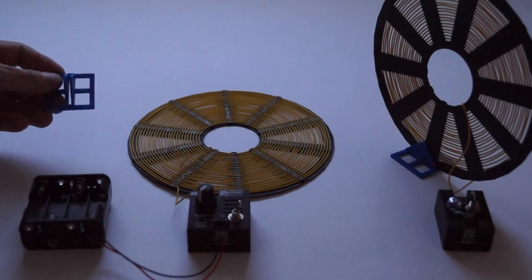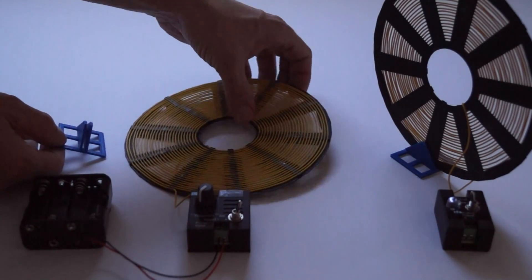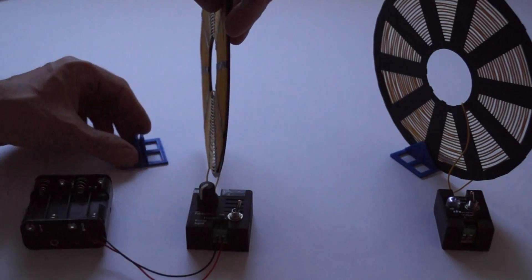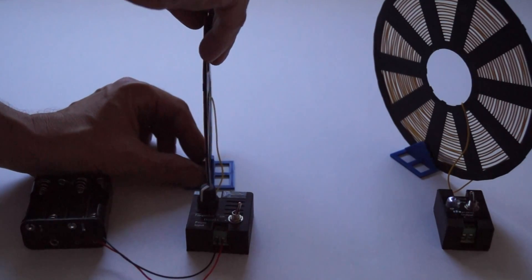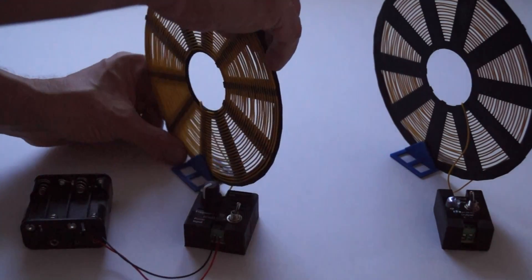The pre-assembled kit is ready to go out of the box. Simply place the spiral coils into the included blue stands and insert eight AA batteries into the battery holder.